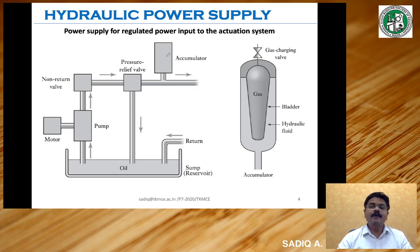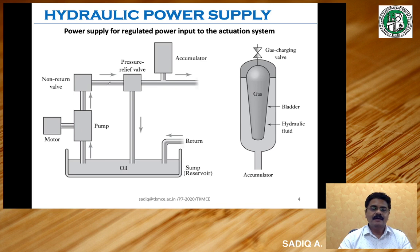The accumulator is meant for providing regulated flow of the liquid. In a hydraulic power supply, the elements included are: a pump, a motor, a non-return valve, and a pressure relief valve. These four elements together we call the power supply unit for a hydraulic system.